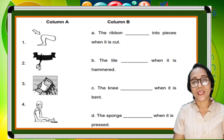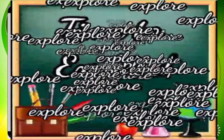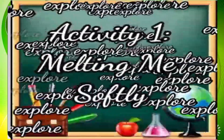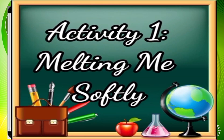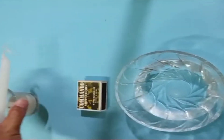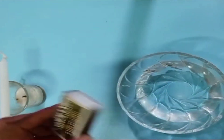Okay kids, did you get all the numbers right? Very good! We must now proceed to activity number 1. Experiment time! Activity 1: Melting Me Softly. After this activity, you will be able to describe what happened to solid materials when heated and cooled.